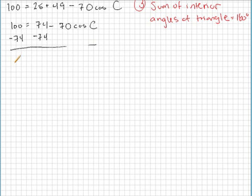And when we do that, we get 26 on the left-hand side and we'll get negative 70 cosine c on the right-hand side. Let's divide both sides by 70. If you do that, you should get negative 13 over 35 on the left-hand side, and then you'll just be left with cosine c on the right-hand side.